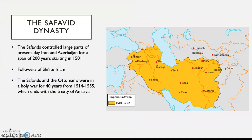The Safavid dynasty is considered to be a foundational dynasty to the Islamic republic of Iran. 'Safavid' itself translates to 'purity of their religion,' and starting in 1501, for over a 200-year span, the Safavids controlled large parts of what is today Iran and Azerbaijan.